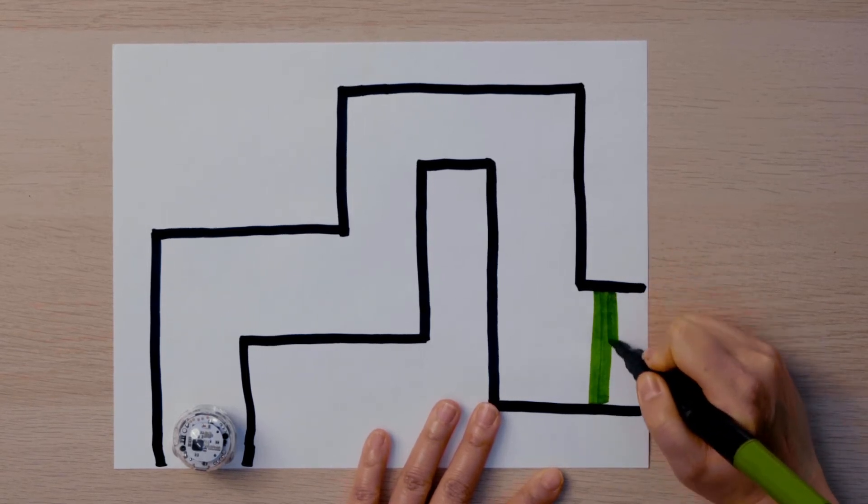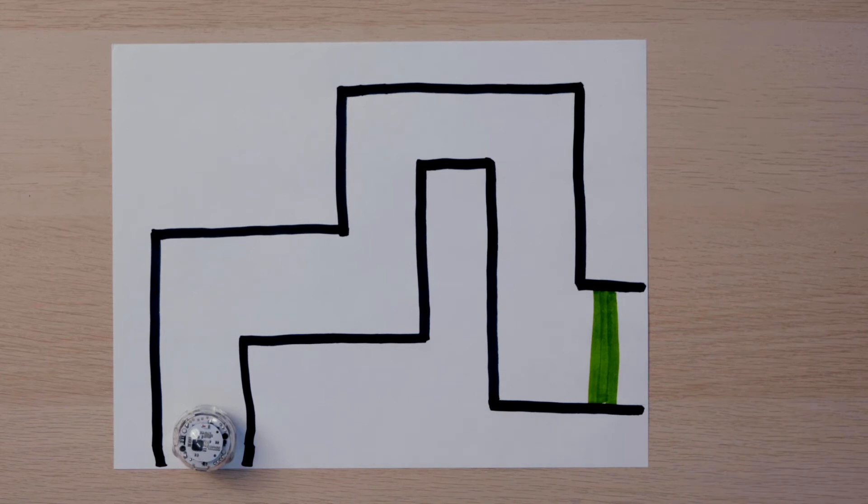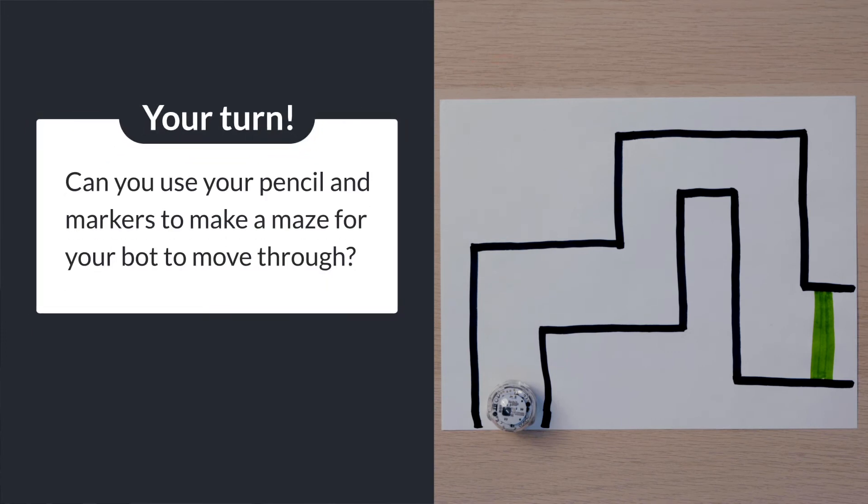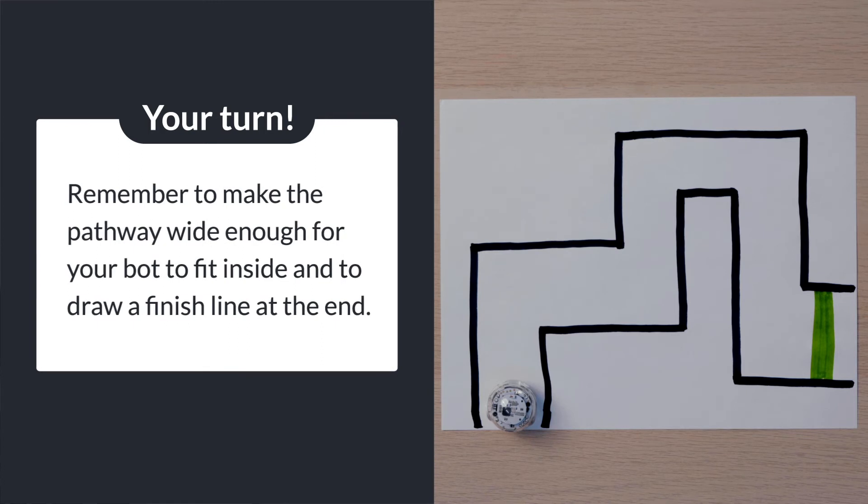Now it's your turn to make your maze. Your maze does not need to be the same shape as mine. Can you use your pencil and markers to make a maze for your bot to move through? Remember to make the pathway wide enough for your bot to fit inside and to draw a finish line at the end.